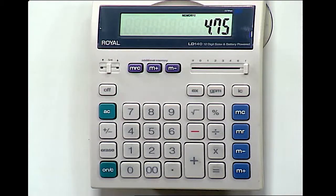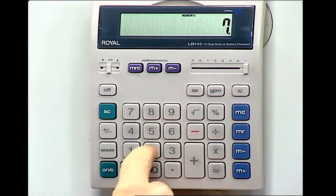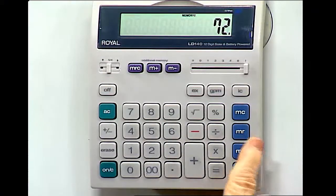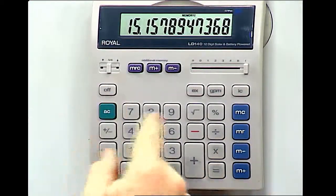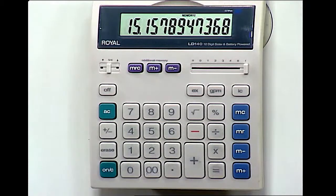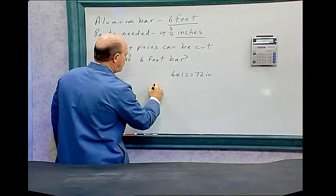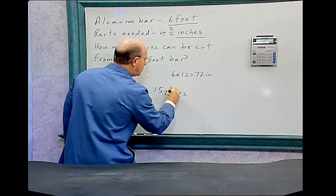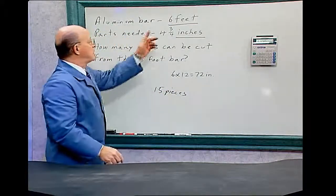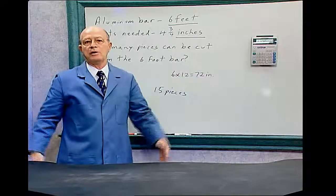Now we'll take the other number, which is 72. 72 divided by memory recall equals 15.1578. So we will get 15 pieces out of that 6-foot length of aluminum bar.